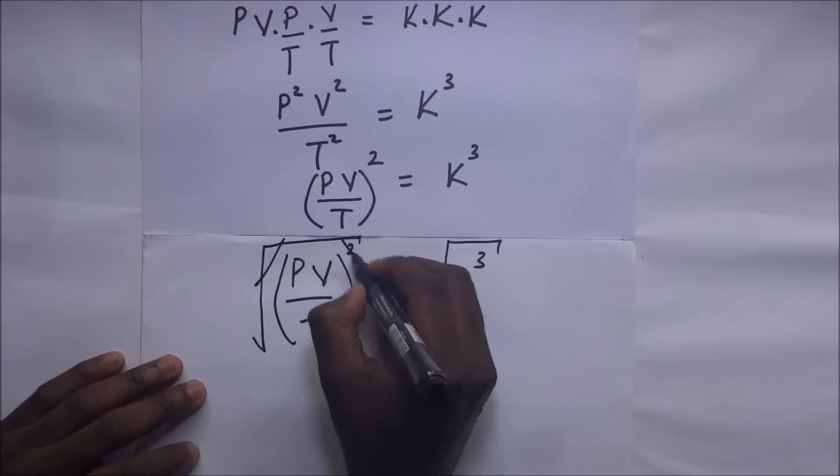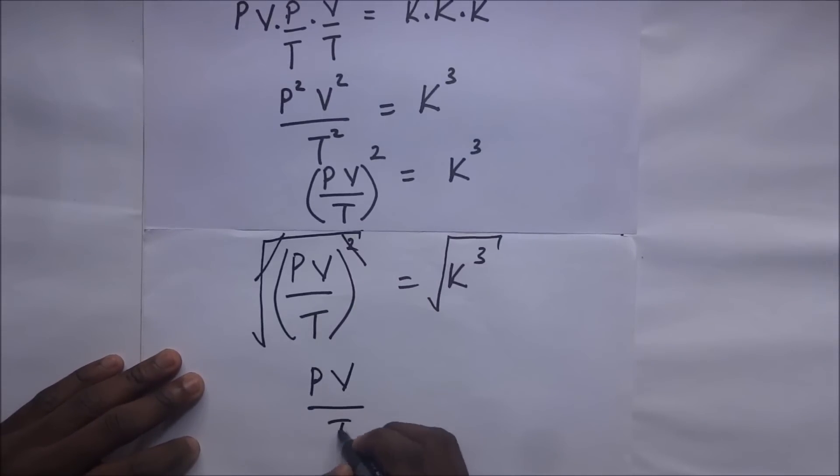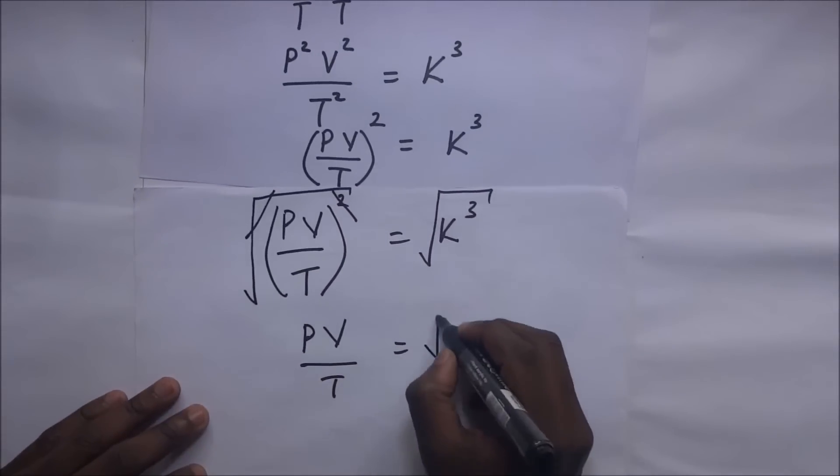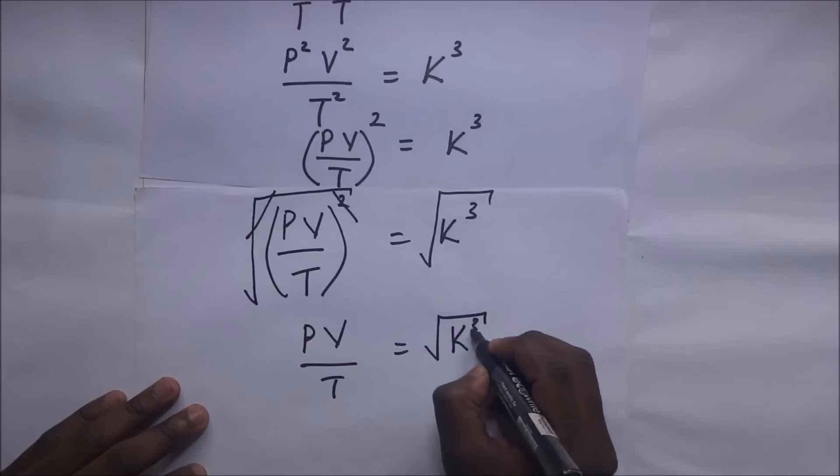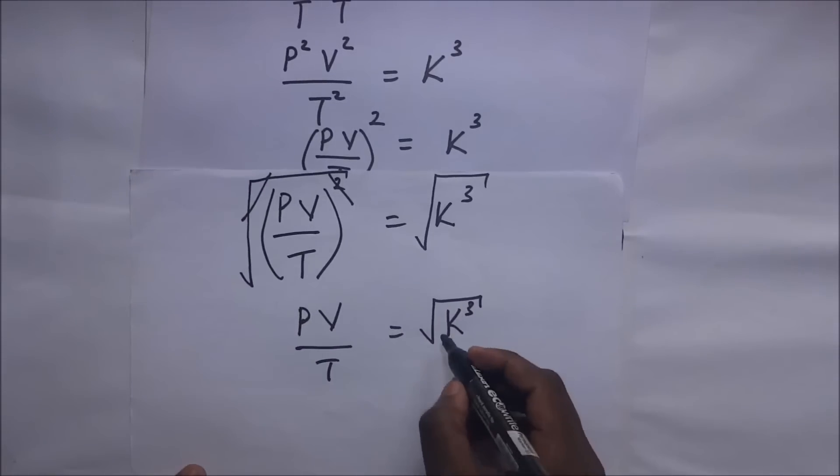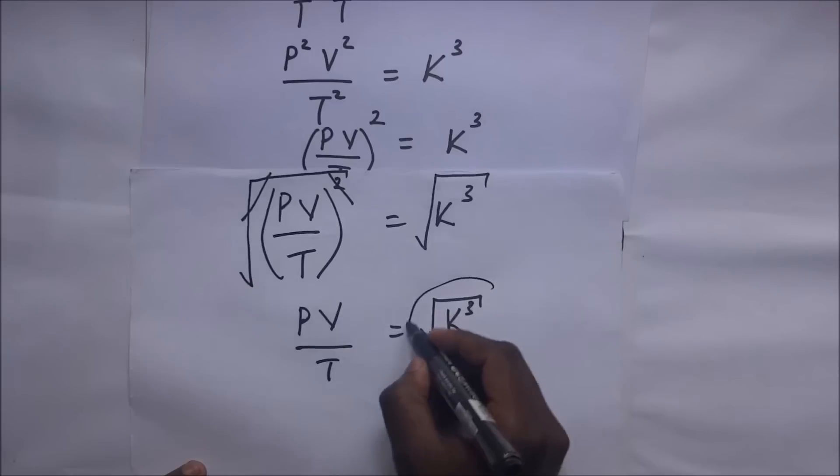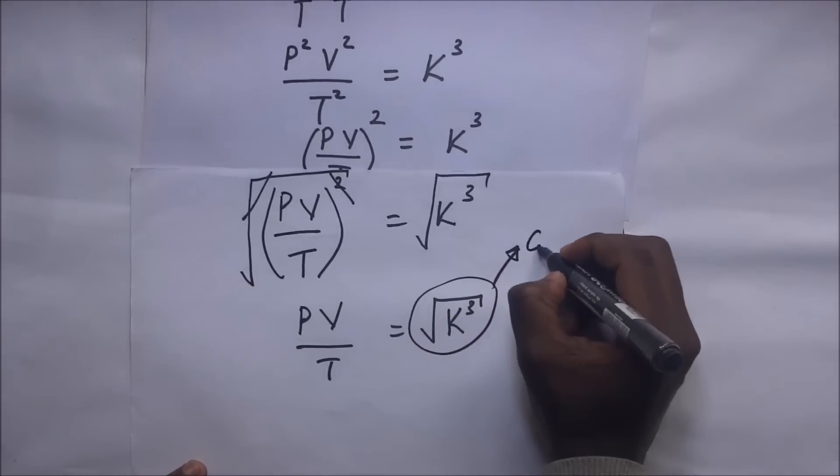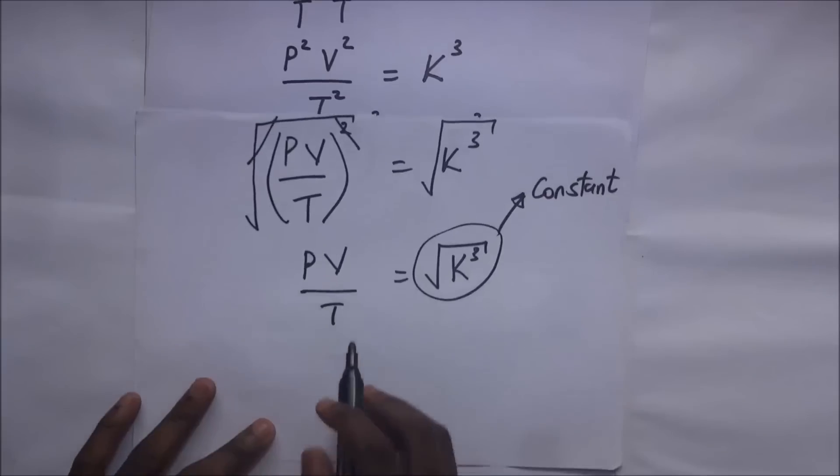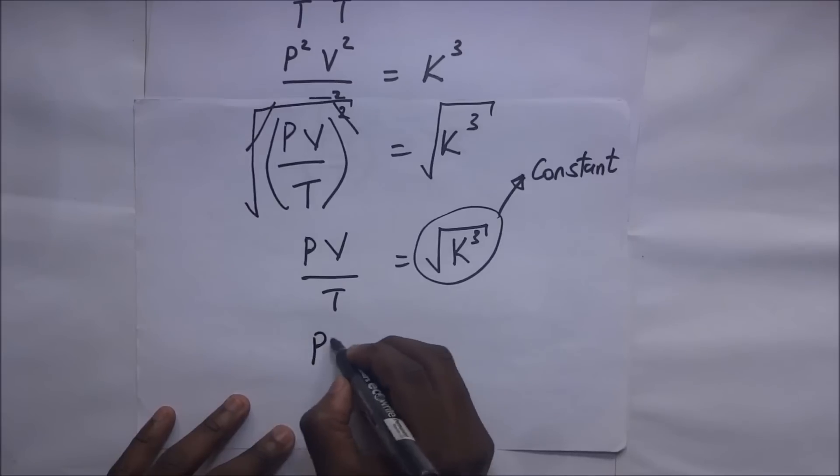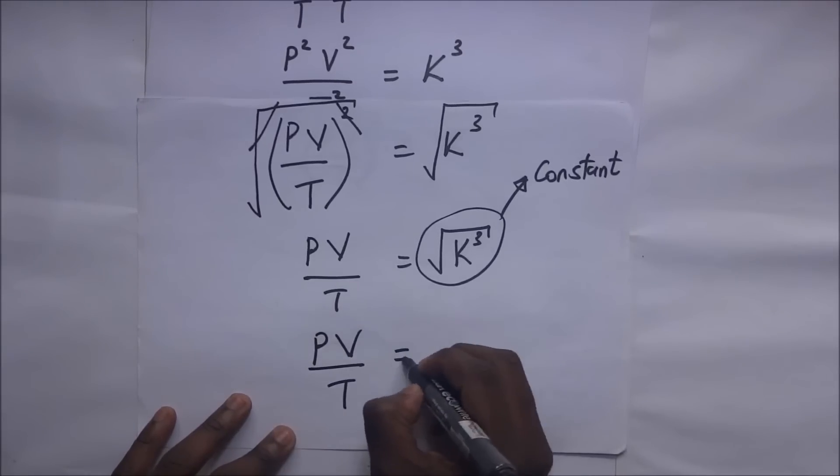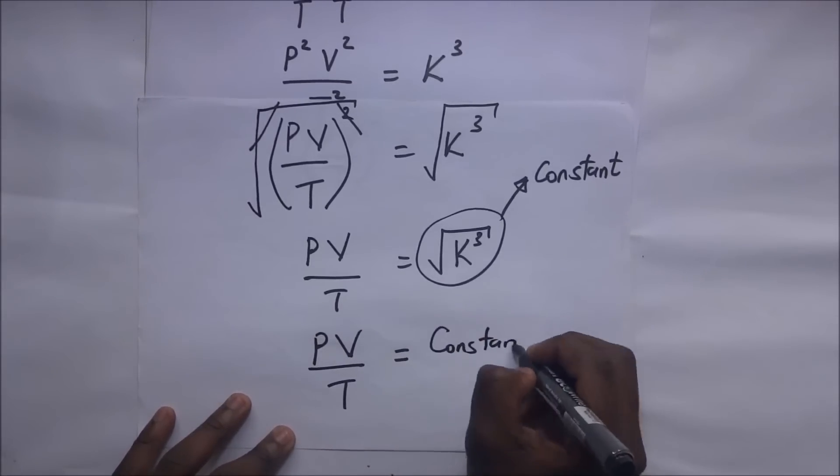This goes with that, you remain with PV over T going to give us the square root of K to the power 3. Now the square root of K to the power 3 is still a constant. So the ideal gas equation zeros down to PV over T is going to give us a constant. That is the ideal gas equation.